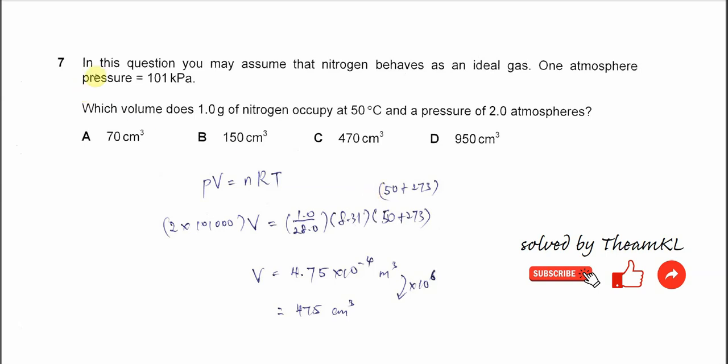Question 7. In this question, you may assume that nitrogen behaves as an ideal gas. One atmospheric pressure is equal to 101 kilopascal. Which volume does 1 gram of nitrogen occupy at 50 degrees C and a pressure of 2 atmospheres?